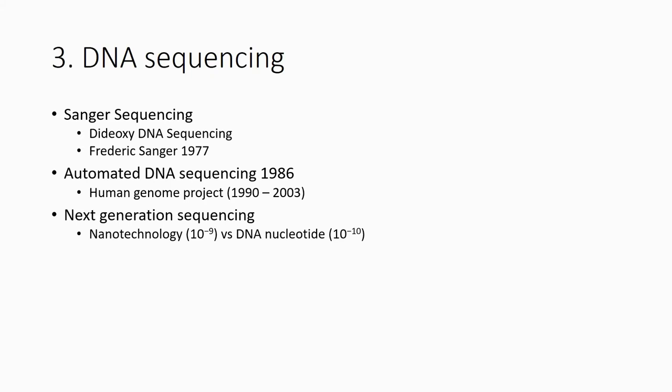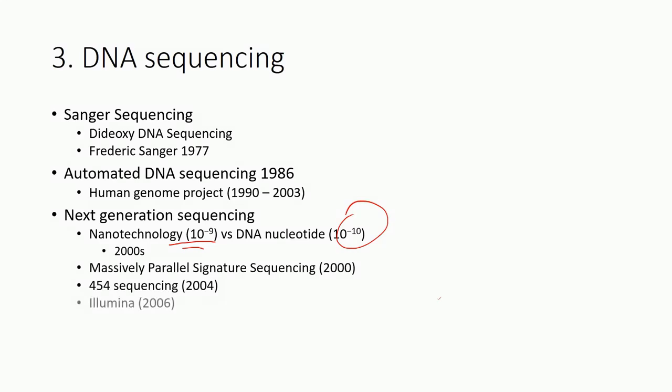After that, we now have next generation sequencing because of the development of nanotechnology. The DNA molecule is about this size. The size of the technology is very close to the DNA molecule already. That means now you can make a hole small enough to put one molecule. In the past it was impossible. Most of the next generation technologies developed based on nanotechnology, starting in 2000.